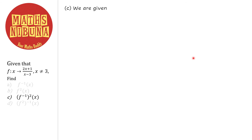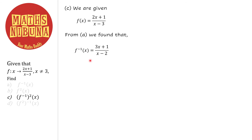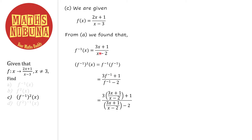Next, question c — find (f⁻¹)²(x). We start with what we found in part a: f⁻¹(x) = (3x+1)/(x-2). Finding (f⁻¹)² means f⁻¹ applied twice, so (f⁻¹)²(x) = f⁻¹(f⁻¹(x)). We replace x with f⁻¹(x) = (3x+1)/(x-2) in the formula for f⁻¹.